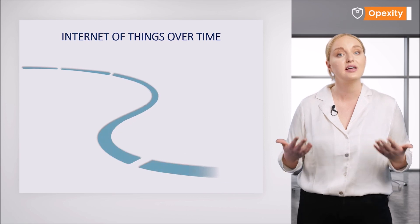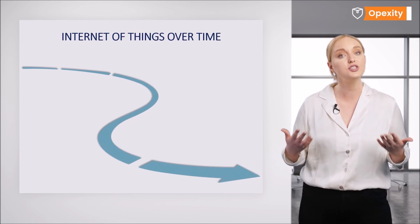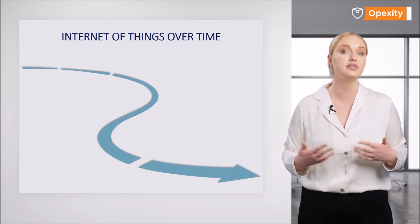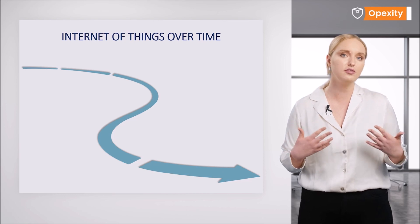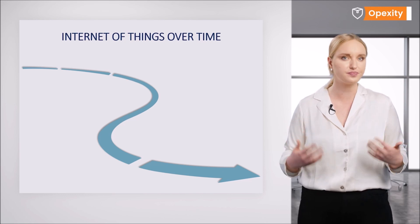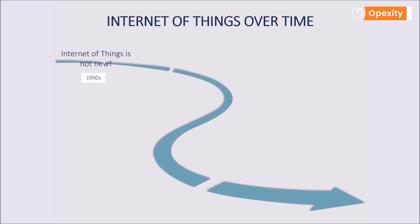Interestingly, the Internet of Things has been a very trendy concept in the last couple of years, but the concept itself is not at all that new. Back in the 1990s, there were devices that were controlled via the Internet. These devices were and still are in our homes — for example, air conditioning or fire suppression systems. In banks, installed alarms connect to the local police or private security companies.